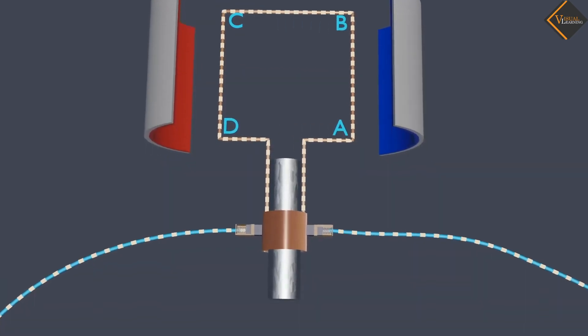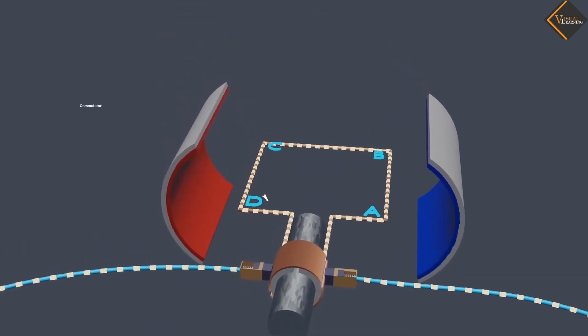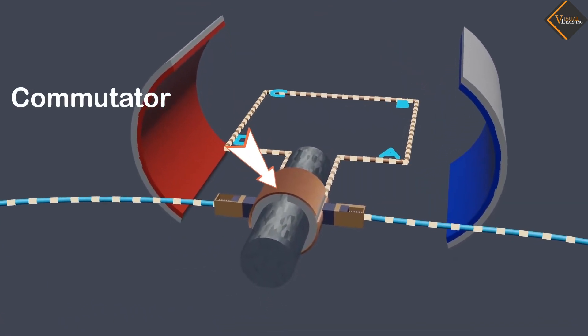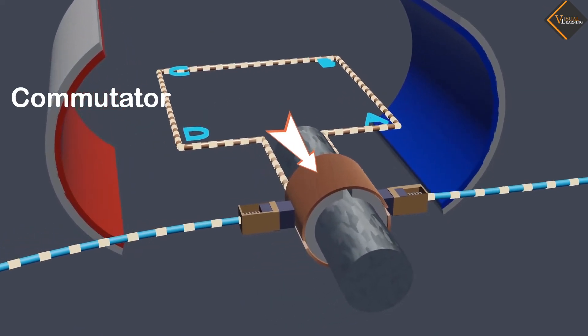A device that reverses the direction of flow of current through a circuit is called a commutator. In electric motors, the split ring acts as a commutator.